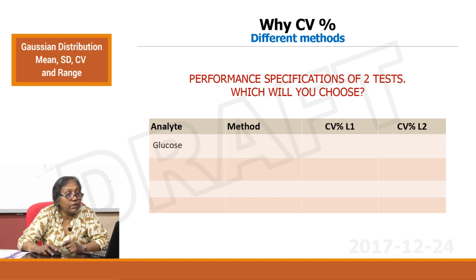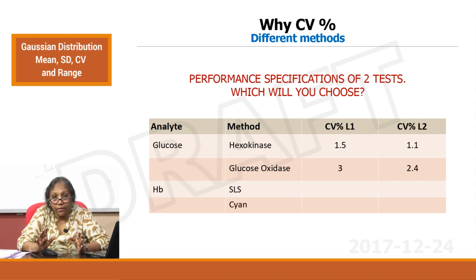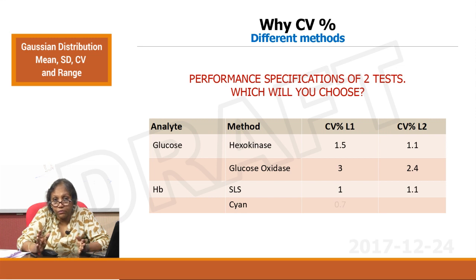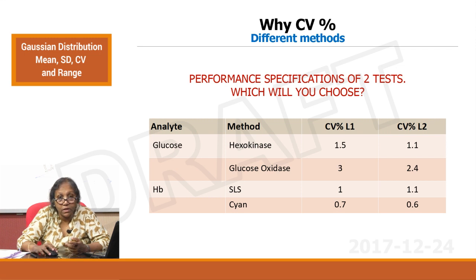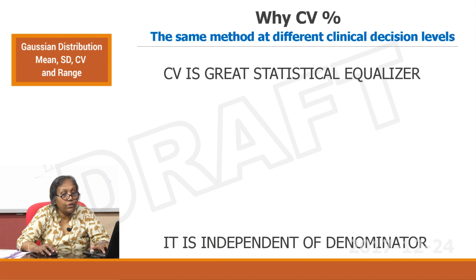For example, comparing two glucose methods — hexokinase and glucose oxidase: CVs at Level 1 are 1.5 and 1.1, and at Level 2 are 3 and 2.4. It is very evident the method with more precision is the first one. Similarly for hemoglobin, looking at two methods, it is very easy to compare: look at the CV performance characteristics and decide which is the better method. CV is independent of the denominator.